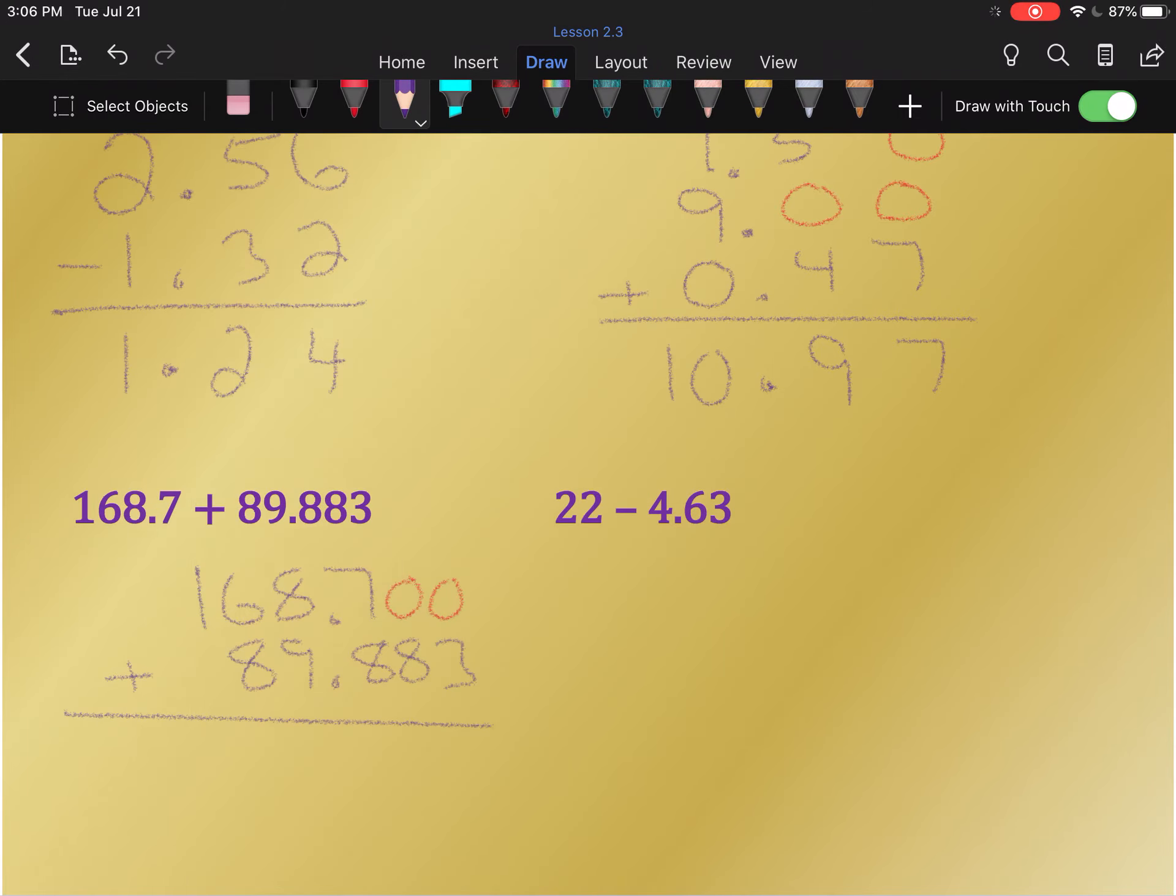Add them up. We get 3, 8, 15. Carry the 1. Decimal point gets dropped straight down. 1 and 9 is 10, and 8 is 18. Carry the 1. 1 and 6 is 7, 7 and 8 is 15. Carry the 1. 1 plus 1 is 2.